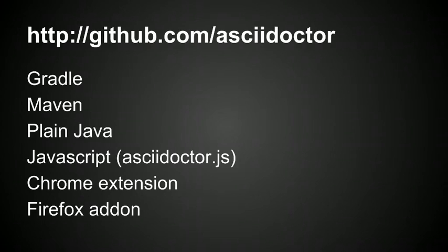AsciiDoctor — you can find all the information about this organization on GitHub. The main project is AsciiDoctor. As I said, it's implemented in Ruby, but that's fine. There is another project called AsciiDoctorJ, which is a wrapper on top of plain AsciiDoctor using JRuby. From there we can construct any other tool based on the JVM that consumes AsciiDoctorJ. In this case we have a Maven plugin and a Gradle plugin. If you give the Gradle plugin a test and it doesn't work for you or you're missing something, please send me a message or a tweet because I am one of the authors — so if it doesn't work, it's my fault and I'll fix it.